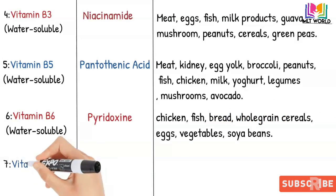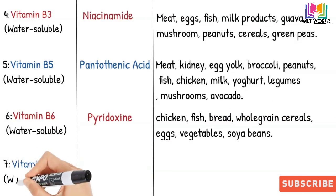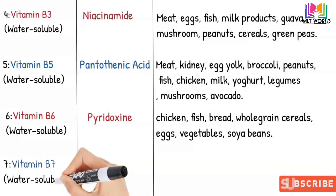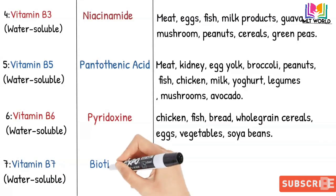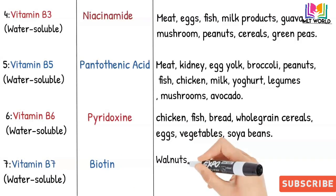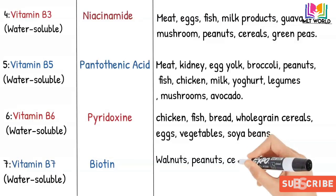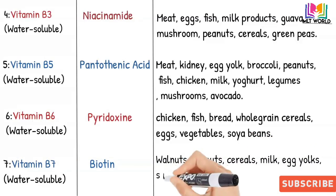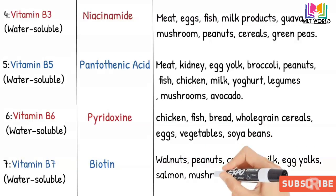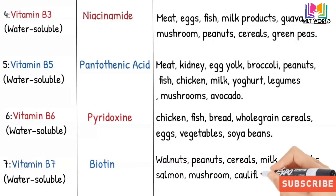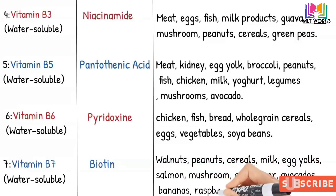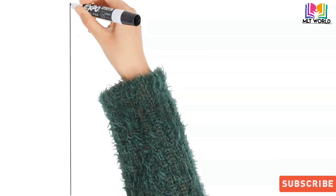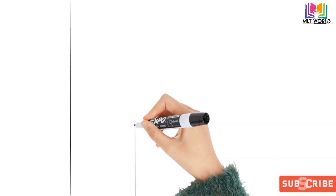Next is Vitamin B7, which is also water-soluble. Its scientific name is biotin. Sources include walnuts, peanuts, cereals, milk, egg yolks, salmon, mushrooms, cauliflower, avocados, bananas, and raspberries.